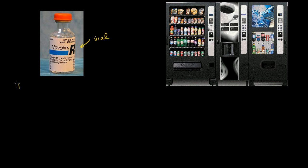So in one column I'll put price, and in the other column I will put quantity. So let's say that insulin right now is going for $5 a vial. We have a group of diabetics who need insulin, and they're all going to buy the insulin they need. And let's say in this group, that turns out to be 100 vials per week. That's exactly what they need to maintain their insulin.